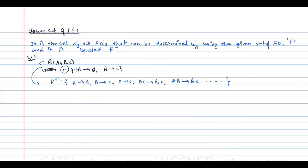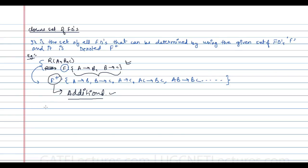Returning to our example with given FDs A→B and B→C, and the 3-attribute relation R(A, B, C): there are 2^3 = 8 subsets. Those subsets are: phi, A, B, C, AB, BC, AC, and ABC. The same 8 subsets apply to both the left-hand side X and right-hand side Y of each functional dependency.